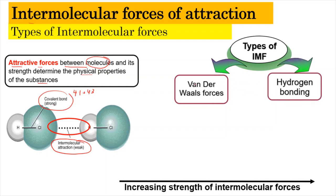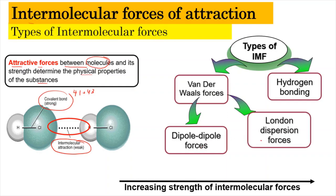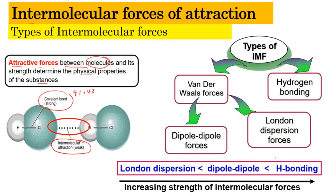Under Van der Waals forces, it can be further divided into two: the dipole-dipole forces, and the London dispersion forces. In comparison, hydrogen bonding is stronger than both dipole-dipole forces and London dispersion forces. The covalent bond is a real bond — a bond asal — whereas intermolecular forces are attractive forces (daya tarikan). For that reason, the covalent bond is the strongest, followed by hydrogen bonding, then dipole-dipole, and London dispersion forces.